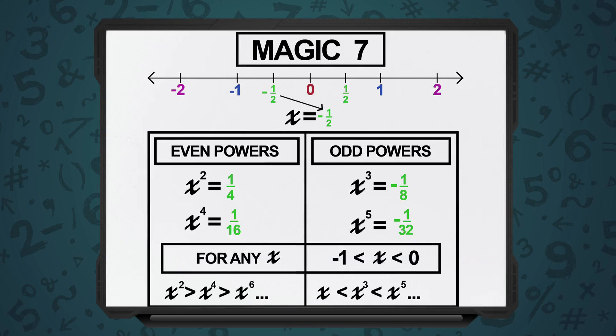And as we've seen in the magic 7 numbers discussion, whatever is applicable to x equal to minus half is applicable to all values of x between 0 and minus 1. Thank you.